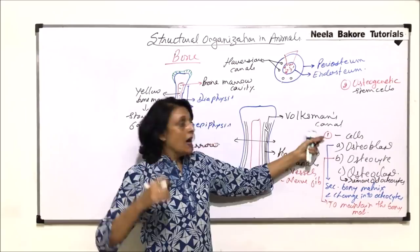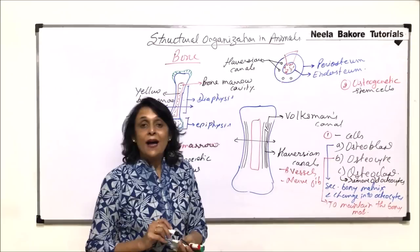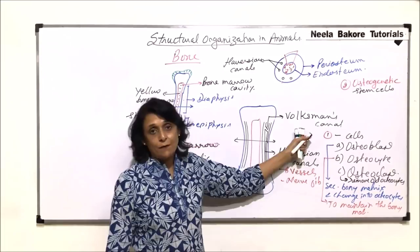Stem cells. They give rise to the osteoblasts, which change into osteocyte, and they are eaten up by osteoclasts. This is the main type of cells that we have.